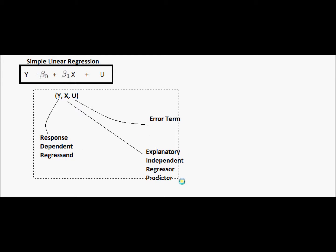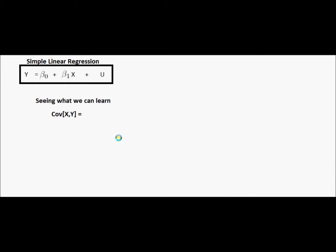So let's see what we can learn about the slope in this simple linear regression. It's just to ask ourselves, can we compute the covariance of x with y? But the only thing we know, given this regression model, is that y is a function, and is this function, of x and u.